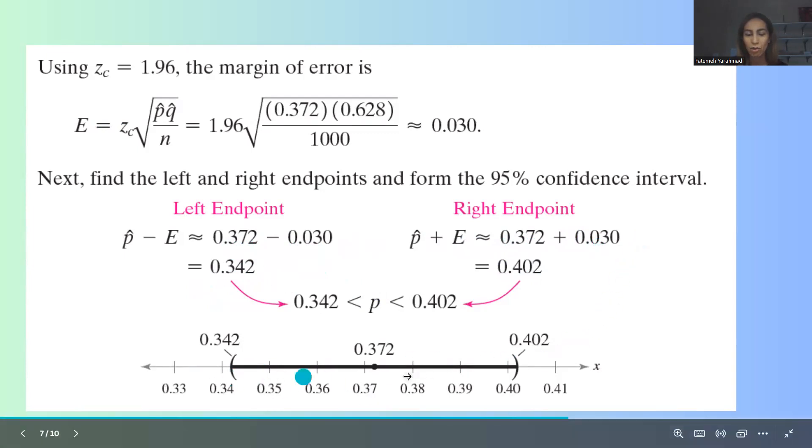We denote the confidence interval this way. This is your point estimate, which is coming from your sample, and then you have the lower bound on the left hand side and you have the upper bound on the right hand side.